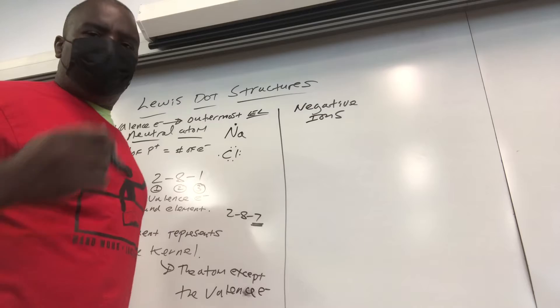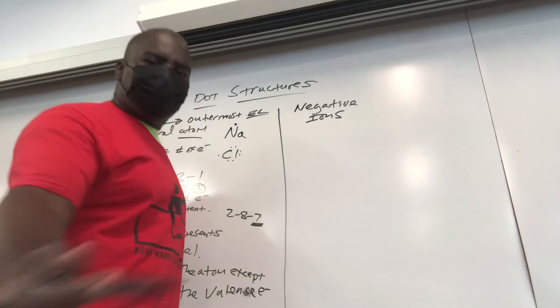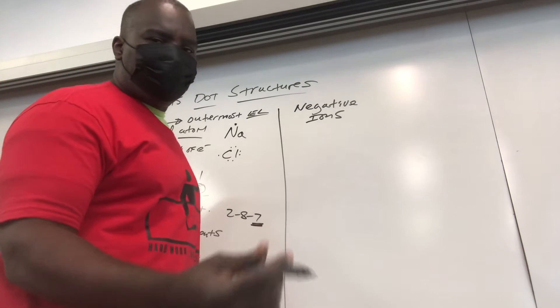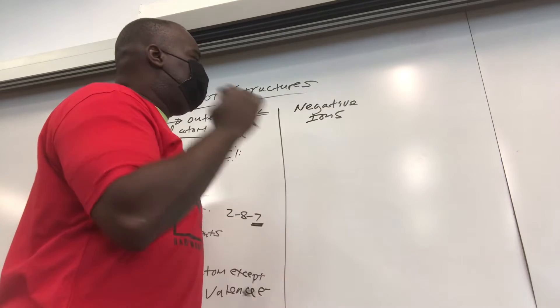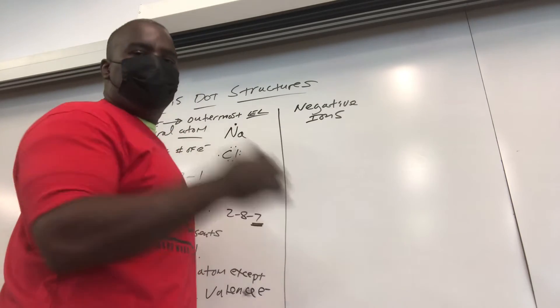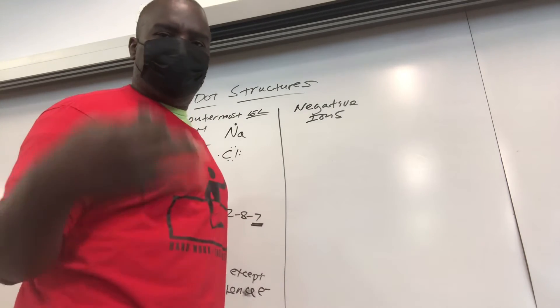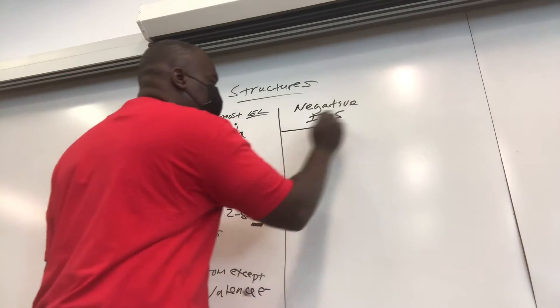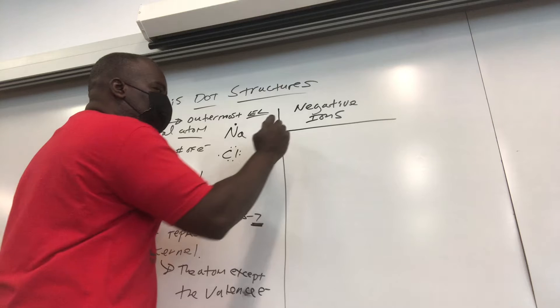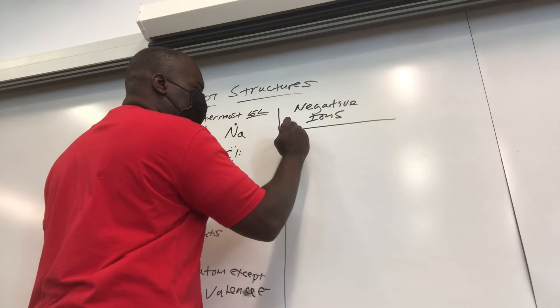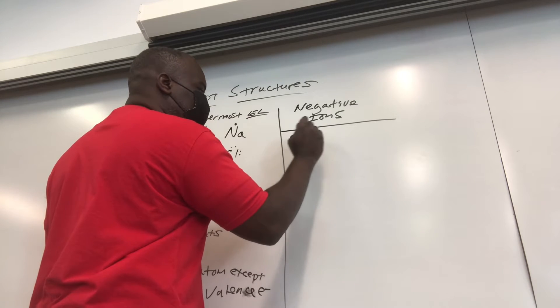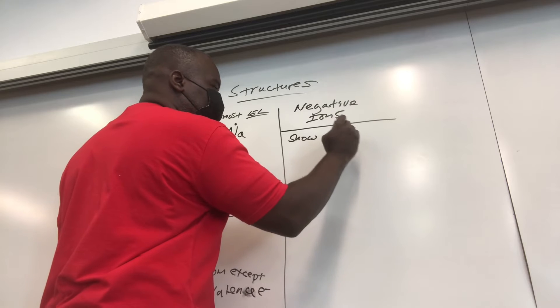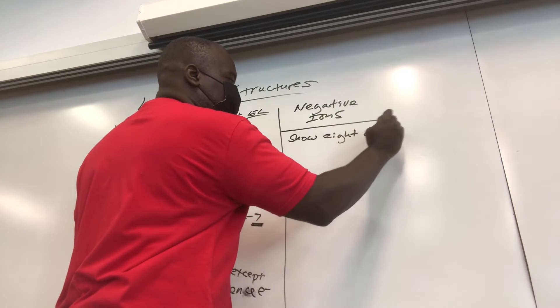Let's move to negative ions. Now, how is a negative ion formed? Once again, chemistry being foundational. You've got to know that ions are formed by loss or gain of electrons. Do not change the protons. So in terms of negative ions, the rule is: you show 8 dots. Now the exception is going to be hydrogen.